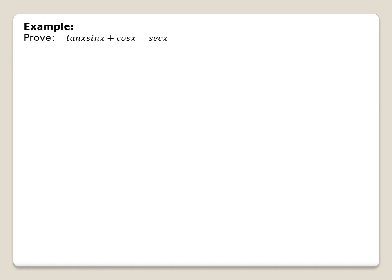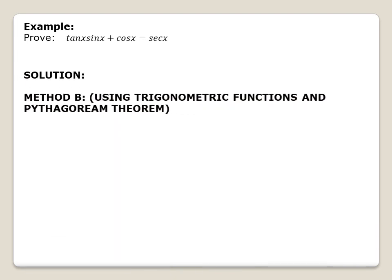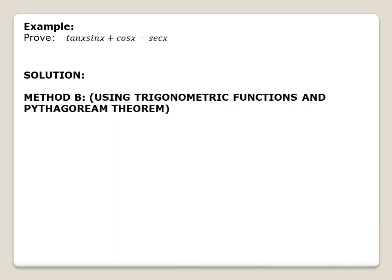Now, using the same example, we will again prove that tan x · sin x + cos x = sec x, but by using Method B — that is, by using trigonometric functions and the Pythagorean theorem. Allow me to rewrite the given equation: tan x · sin x + cos x = sec x.